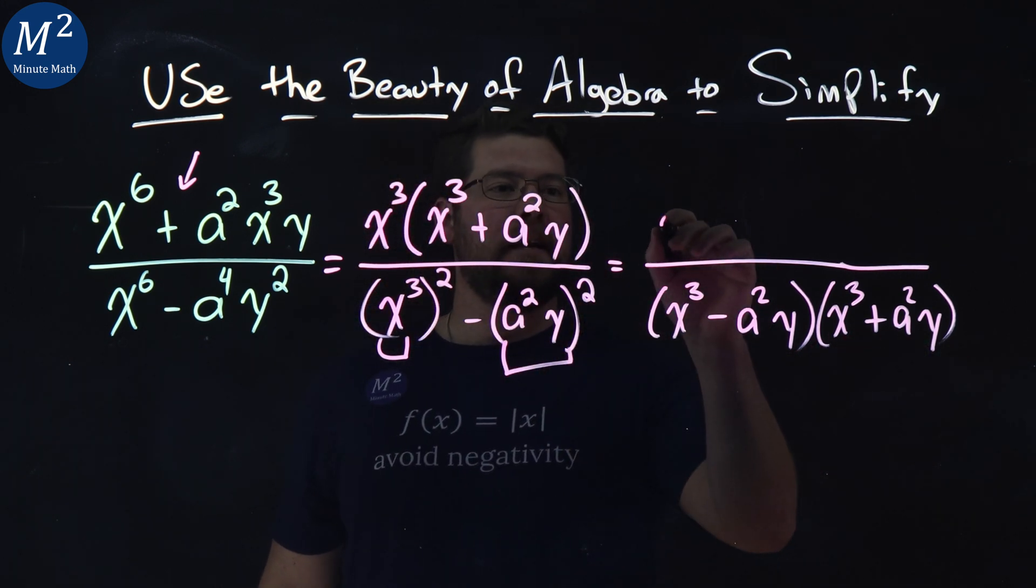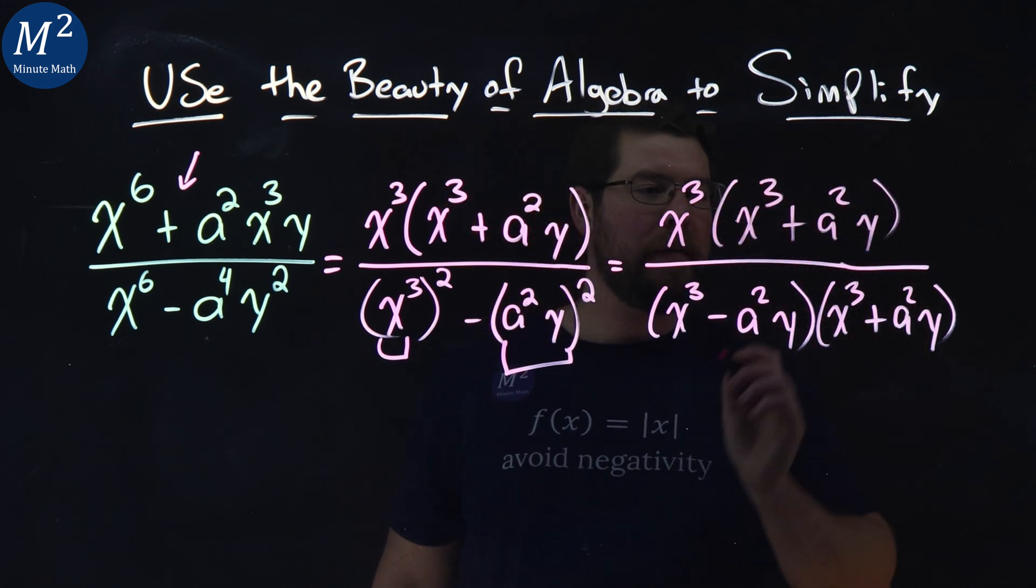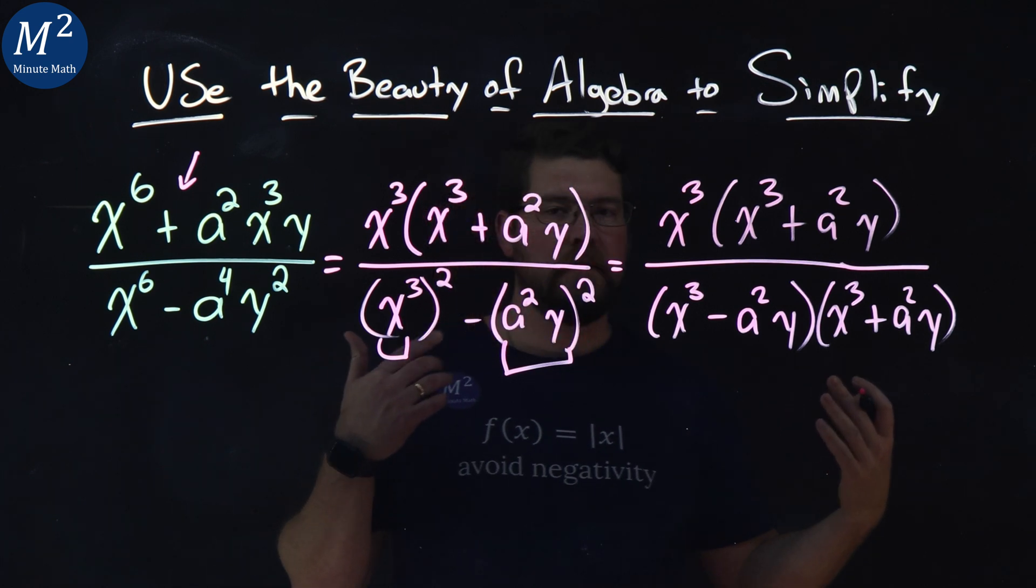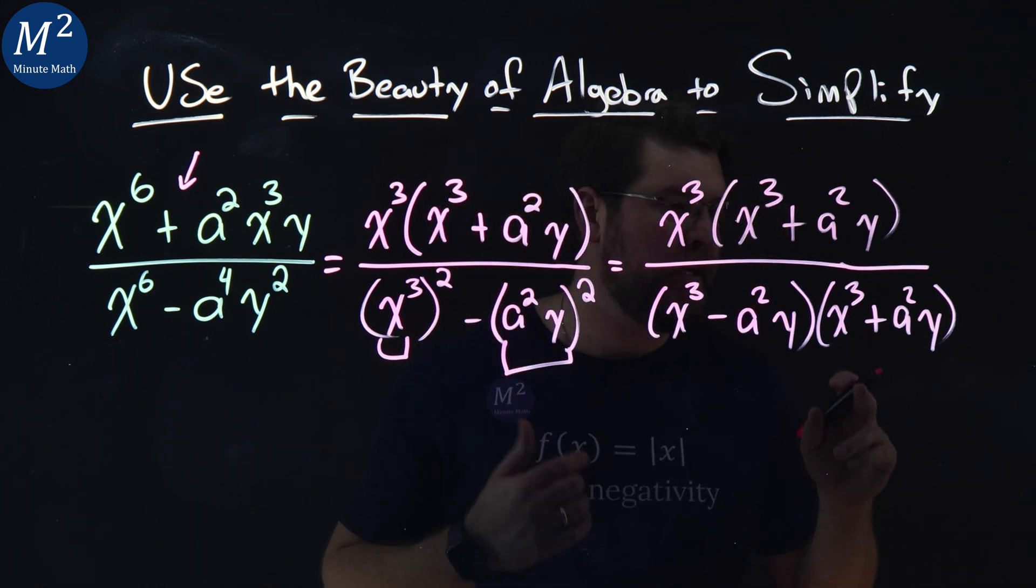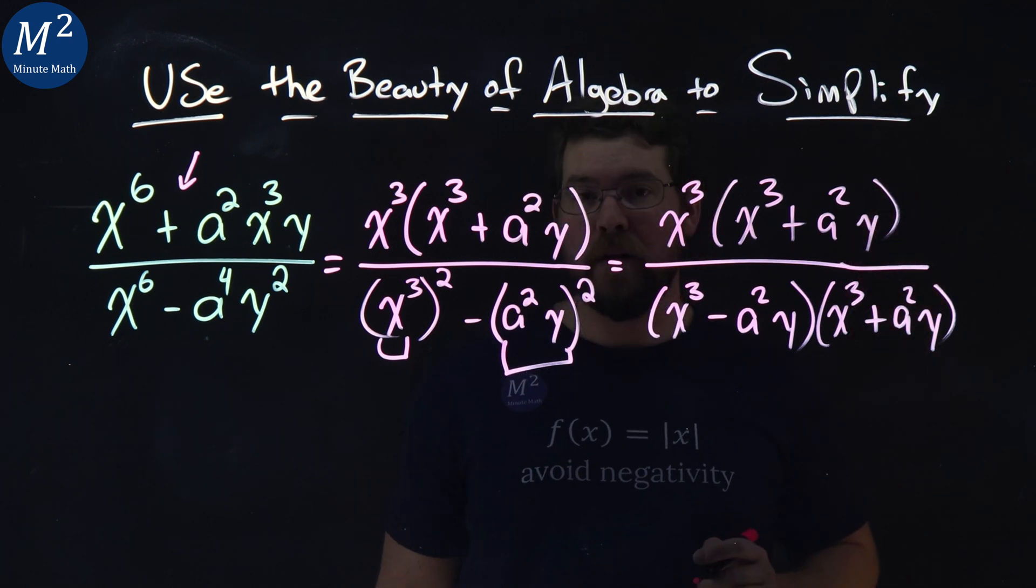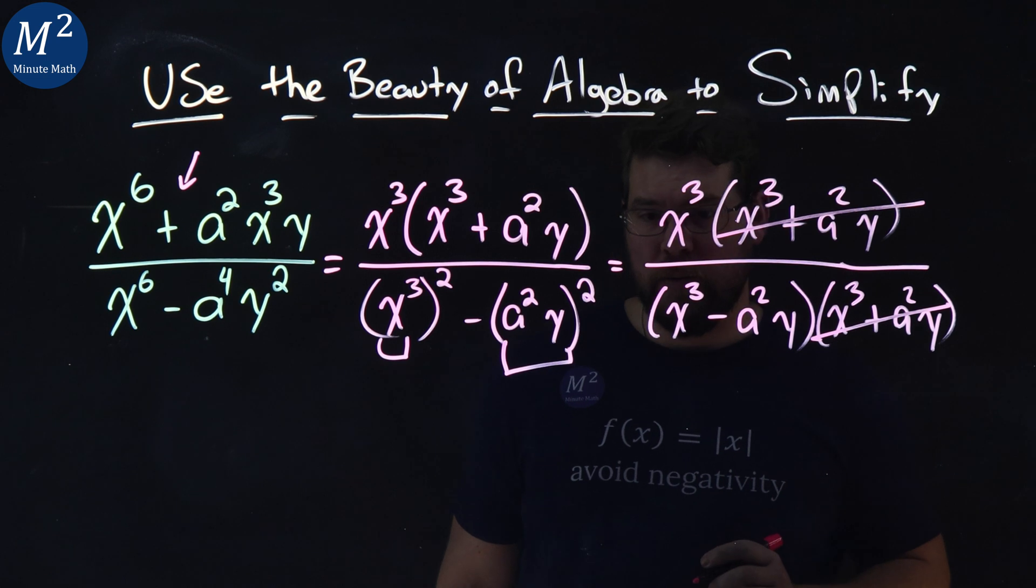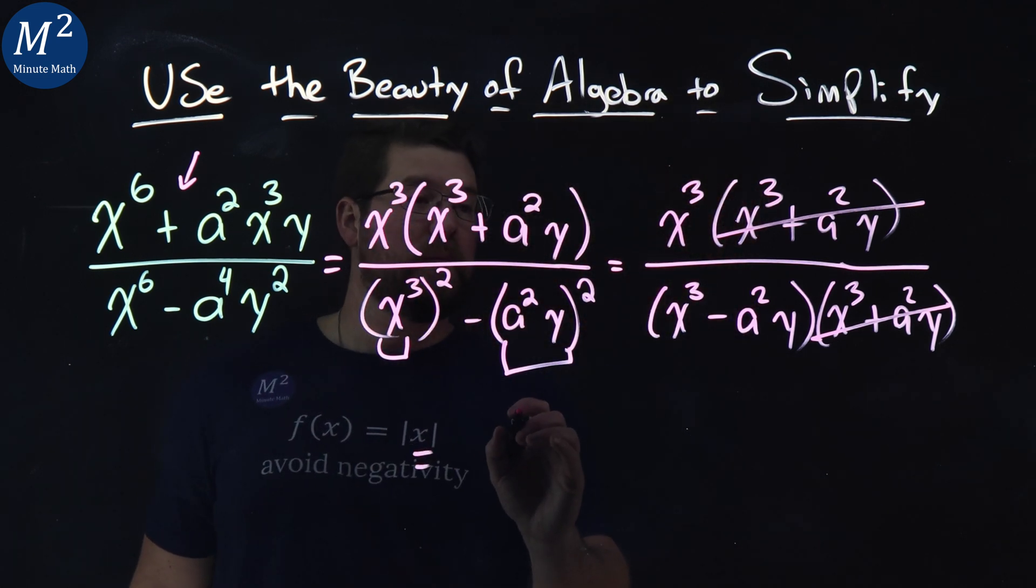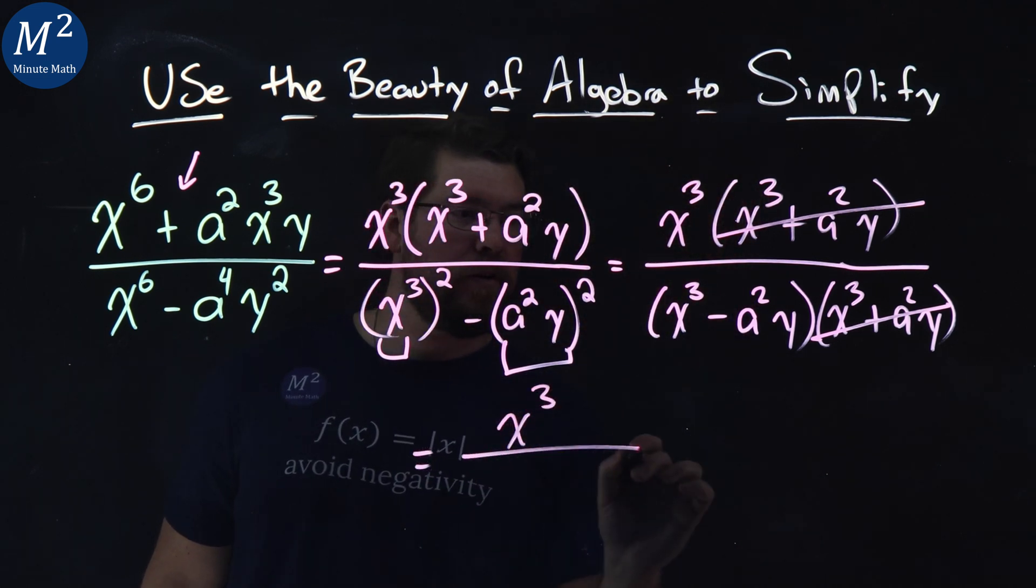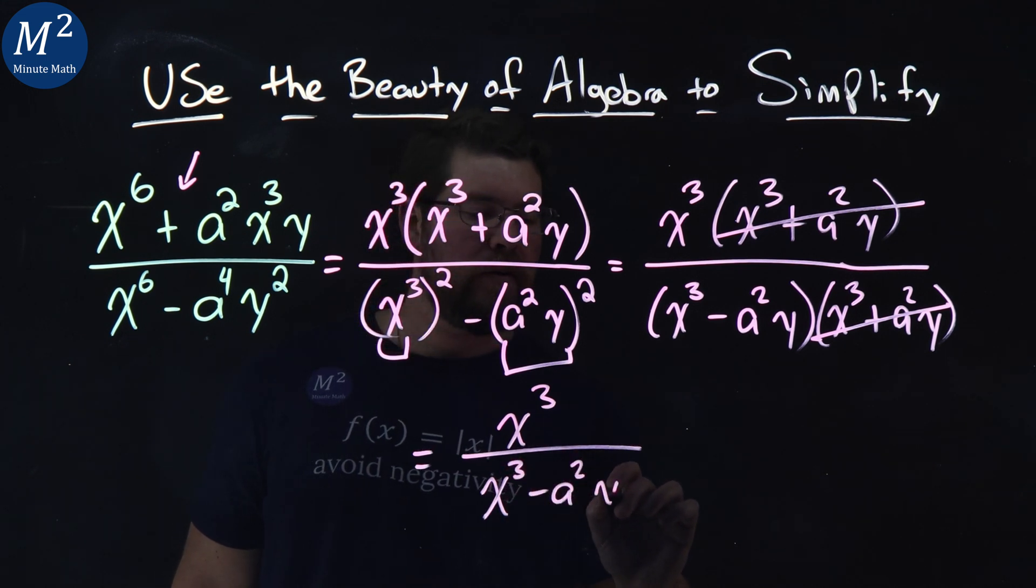Numerator stays the same x to the third x to the third plus a squared y. Hopefully this is the beauty of algebra that you're seeing here. x to the third plus a squared y is repeated in the numerator and denominator and it's being multiplied. We cross those bad boys out and we're left with our simplification. x to the third over an x to the third minus an a squared y.